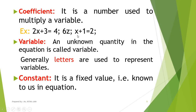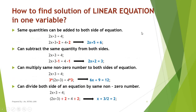A coefficient is a number used to multiply a variable. In 2x, the coefficient is 2. In 6z, the coefficient is 6. In x plus 1 equals 2, the coefficient of x is 1. A variable is an unknown quantity in the equation, generally represented by letters. A constant is a fixed value that is known to us in the equation, like 3, 4, 1, 2, etc.